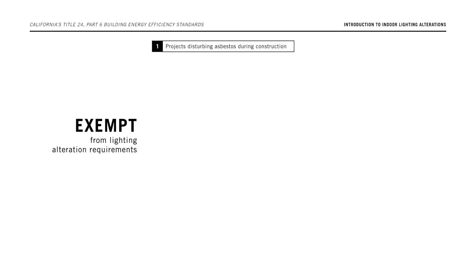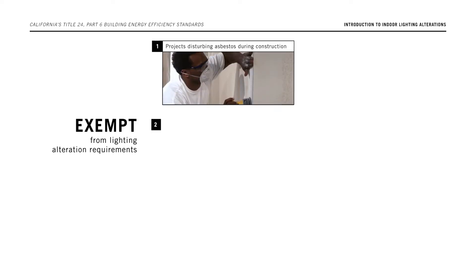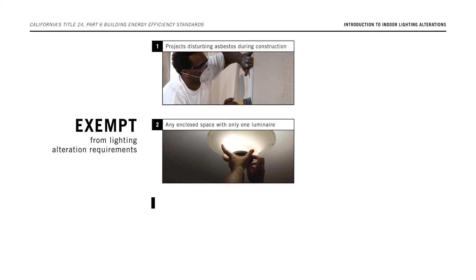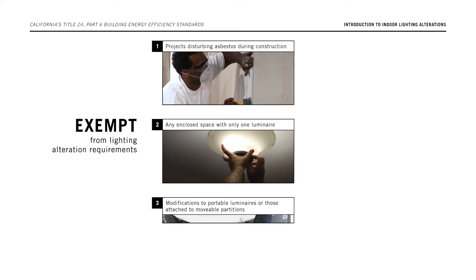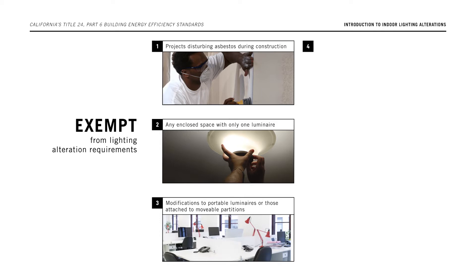Note that there are six types of projects that are exempt from the alterations requirements for indoor lighting. They include projects that could disturb asbestos during construction, any enclosed space with only one luminaire, and modifications to portable luminaires or those attached to movable partitions.